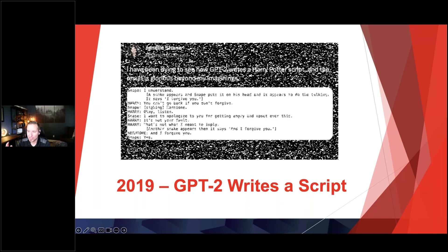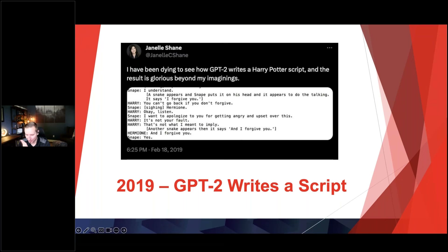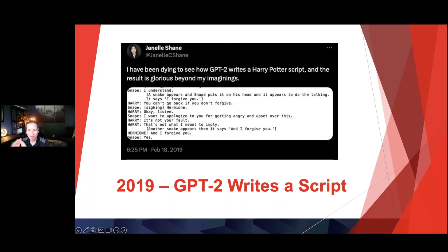For example, someone fed it the entirety of the Harry Potter series and then asked it to write its own sections using the same style. And what it came back with was pretty silly. The character of Snape starts with 'I understand,' then a snake appears, Snape puts it on his head, and it appears to do the talking, saying 'I forgive you.' Then Harry says 'you can't go back if you don't forgive,' then Snape sighs and says 'Hermione.' None of this really makes sense. When I saw this specific Twitter post five years ago, my immediate reaction was: this is dumb, I'm not worried about it taking our jobs or making any meaningful impact.